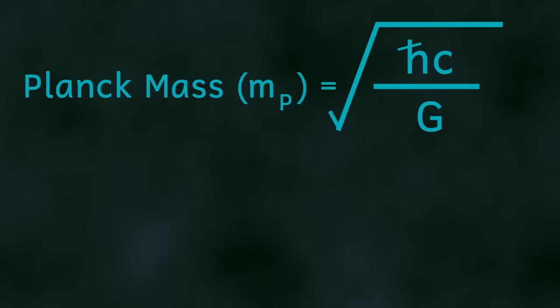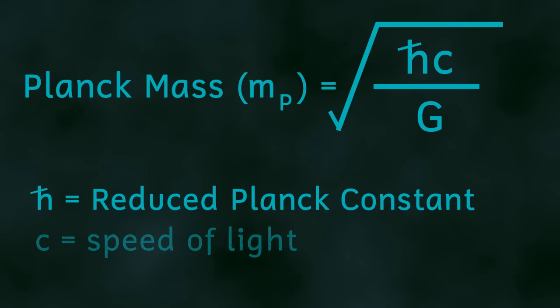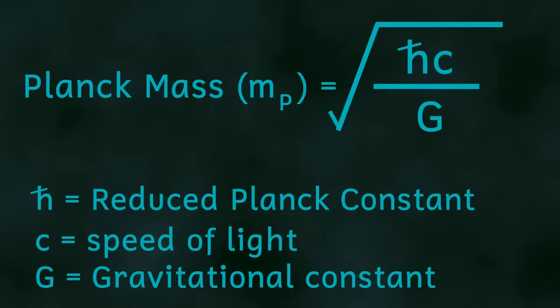So where did the idea for the Planck mass come from and what's its significance? Just like the other Planck units, the Planck mass is derived from some of the fundamental constants of the universe. In this case the reduced Planck constant, the speed of light in a vacuum and the gravitational constant. It's only when we compare it to other particles that we see how truly huge the Planck mass is.